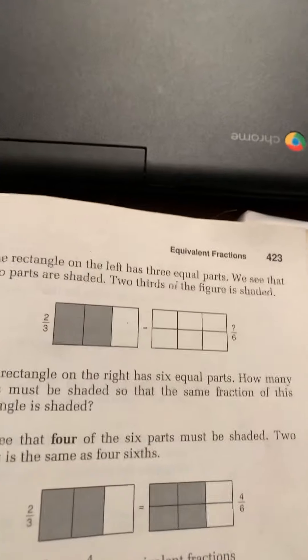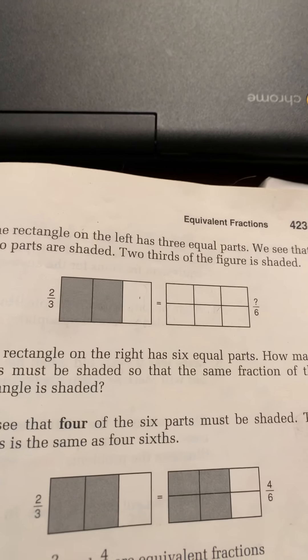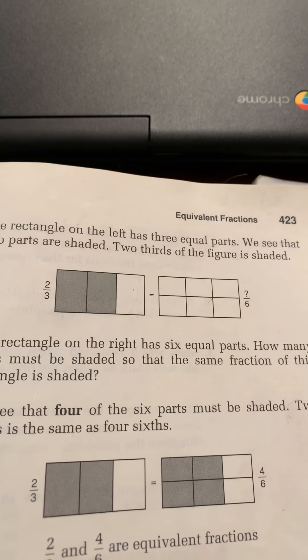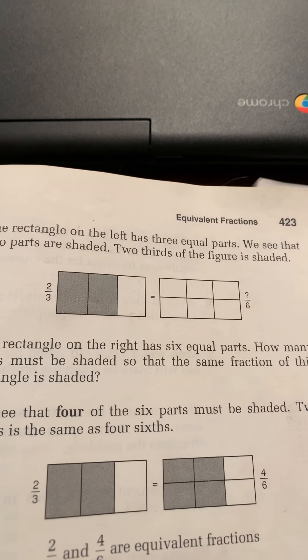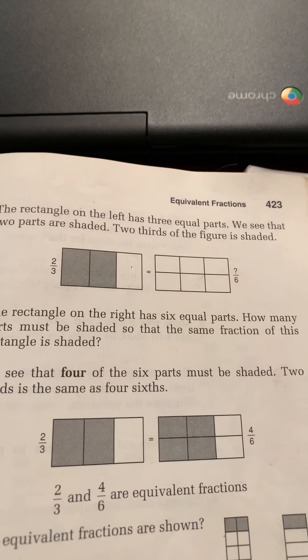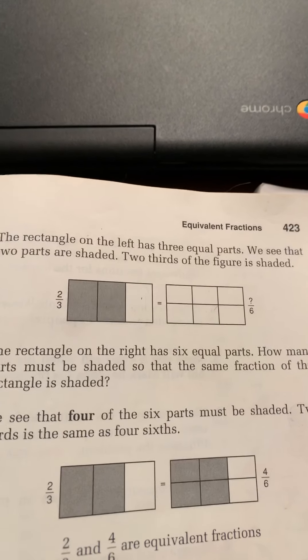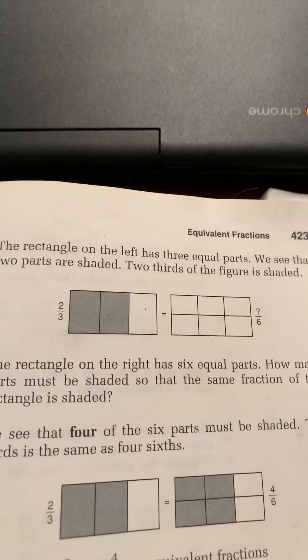Example one says the rectangle on the left has three equal parts and two parts are shaded. Two-thirds of the figure is shaded. The rectangle on the right has six parts, so how many must be shaded so that the same fraction of the rectangle is shaded?